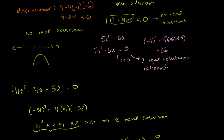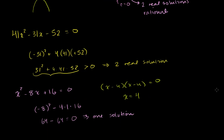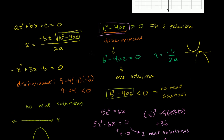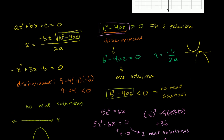Hopefully you found that useful. The discriminant is a quick shortcut — if you don't need to fully solve but just want to know how many real solutions there are, or whether they're rational or irrational, you can just compute b² - 4ac. And I also think it helps you appreciate the parts of the quadratic formula a little better.